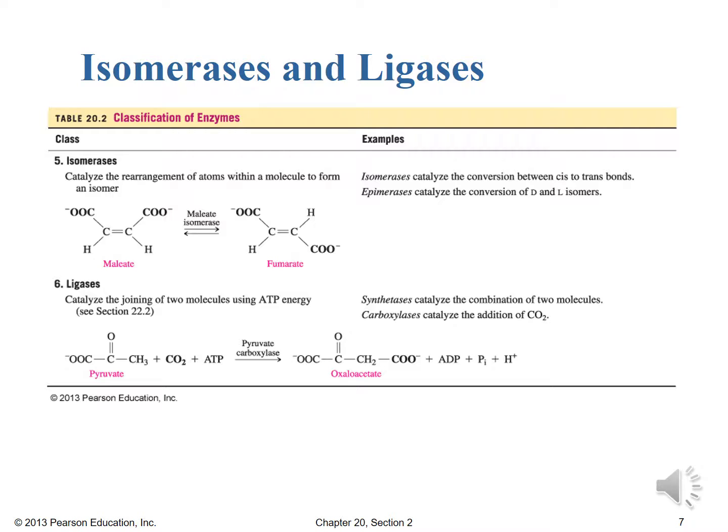So we see here pyruvate plus CO2 plus ATP which is our energy source driving this thing. In the presence of pyruvate carboxylase forms oxaloacetate plus ADP plus a phosphate group plus some hydrogen protons. So there we have it an example of a carboxylase where we added CO2 to pyruvate to form oxaloacetate.